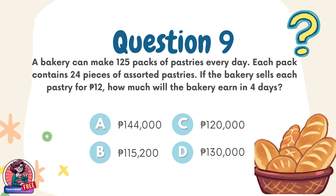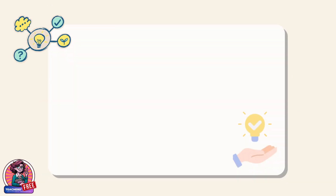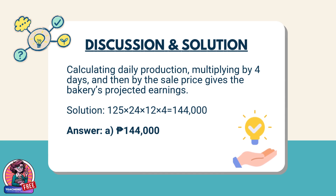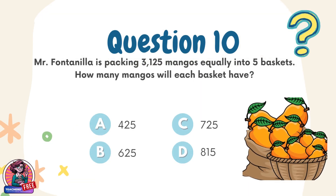Question 9. A bakery can make 125 packs of pastries every day. Each pack contains 24 pieces of assorted pastries. If the bakery sells each pastry for 12 pesos, how much will the bakery earn in 4 days? Choices: A. 144,000 pesos, B. 115,200 pesos, C. 120,000 pesos, D. 130,000 pesos. Discussion: Calculating daily production, multiplying by 4 days, and then by the sale price gives the bakery's projected earnings. Solution: 125 × 24 × 12 × 4 = 144,000. Answer: A. 144,000 pesos.